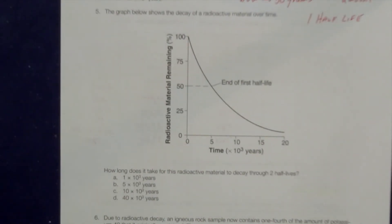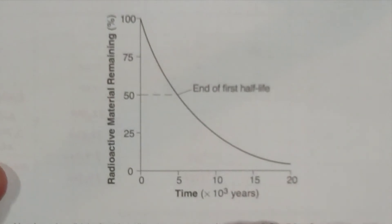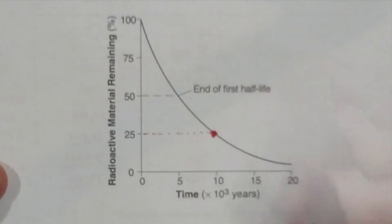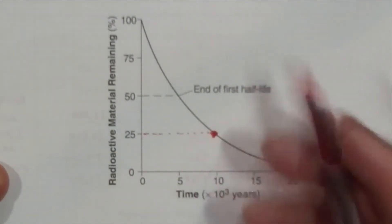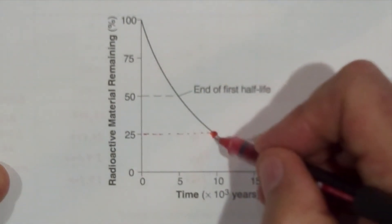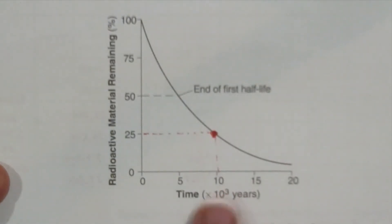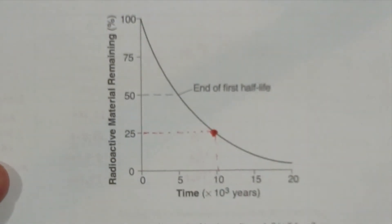Number five: the graph shows the decay of a radioactive material over time. How long does it take for this radioactive material to go through two half-lives? In two half-lives, the original sample of 100% would have dropped down to 25%. On the chart, 25% intersects the line right here. Dropping down to the bottom, I see that registers at 10 × 10³ years.